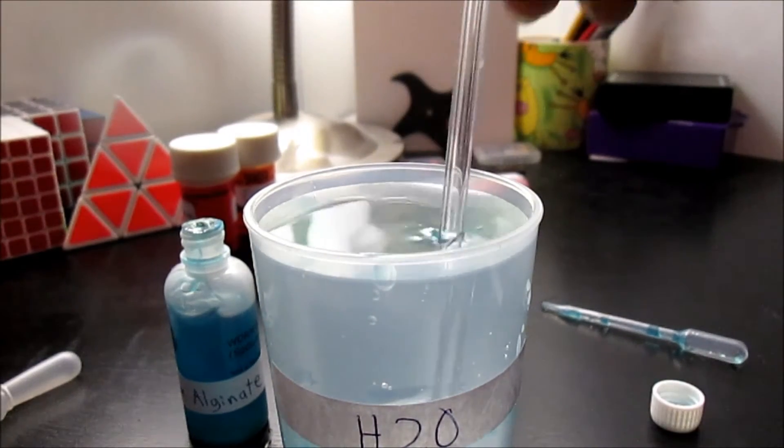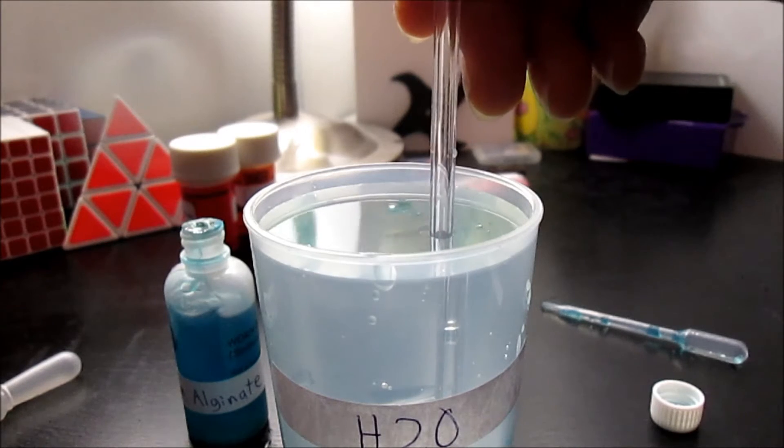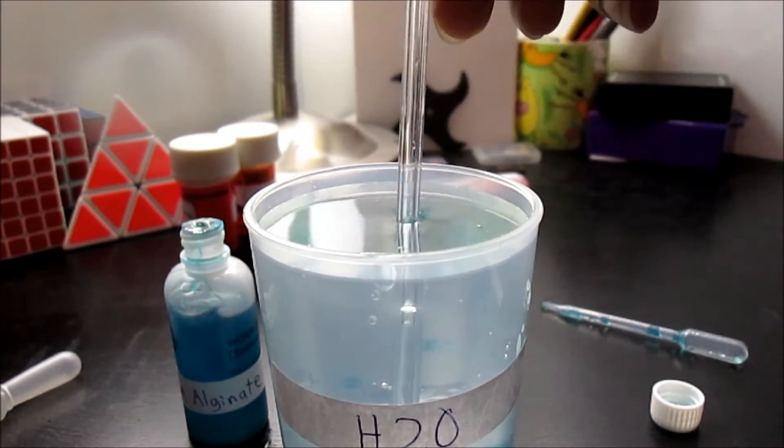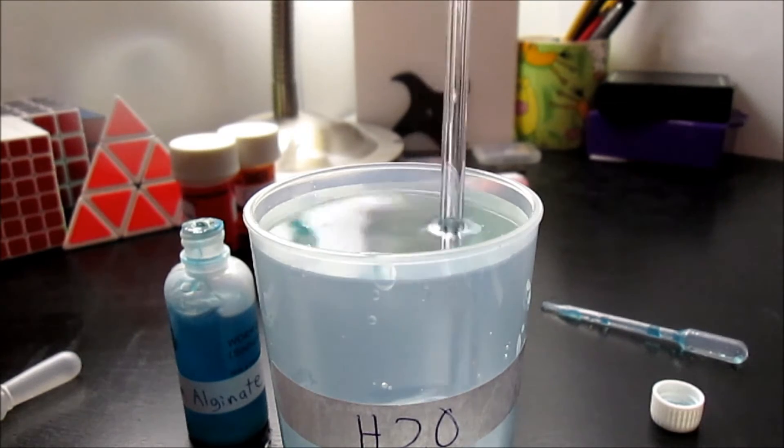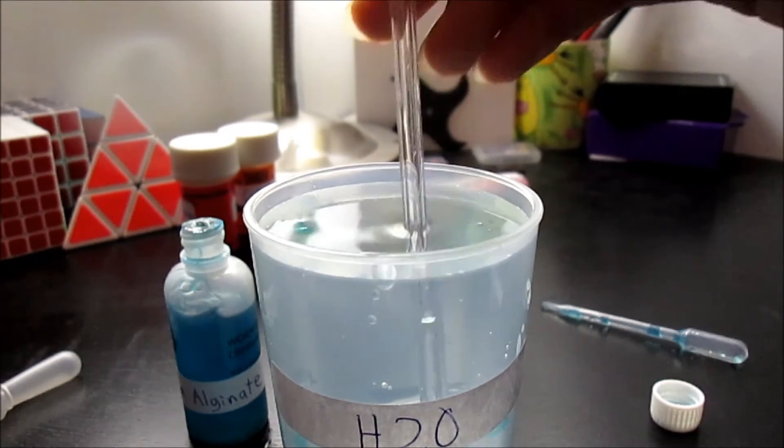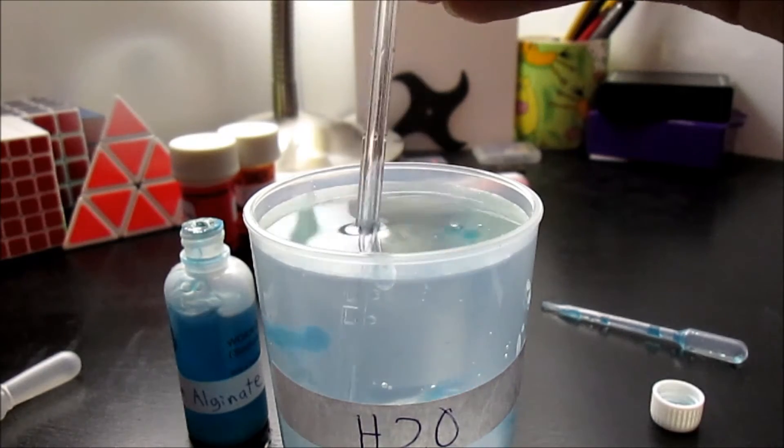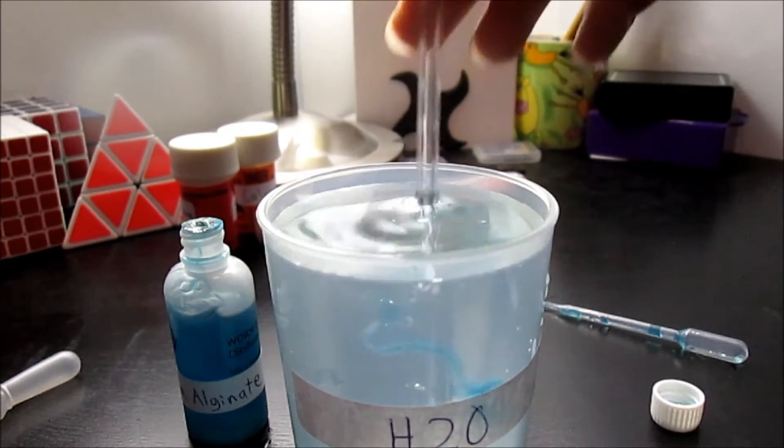The reason this happens is because the sodium alginate reacts with the calcium chloride and it solidifies. Sodium alginate is used in some foods to make it jelly-like. For example, jelly and jello and some jams. It's also used in gelatin mix.